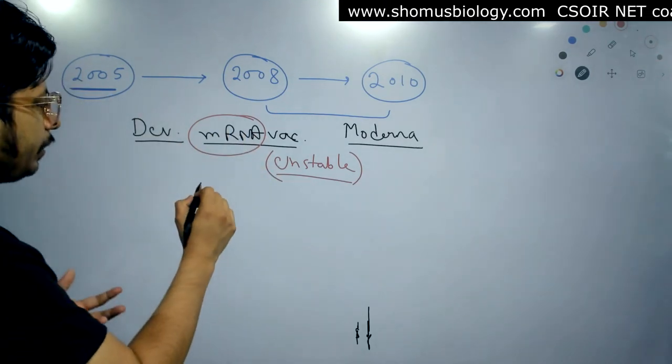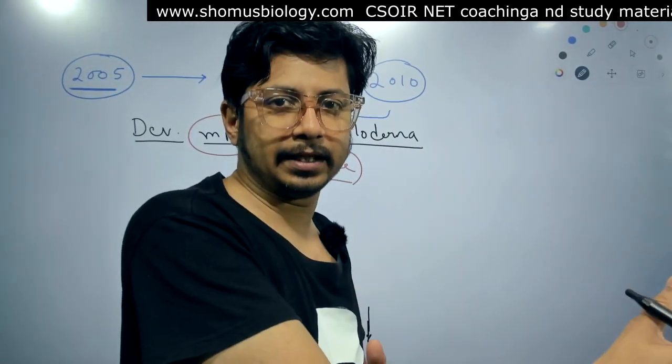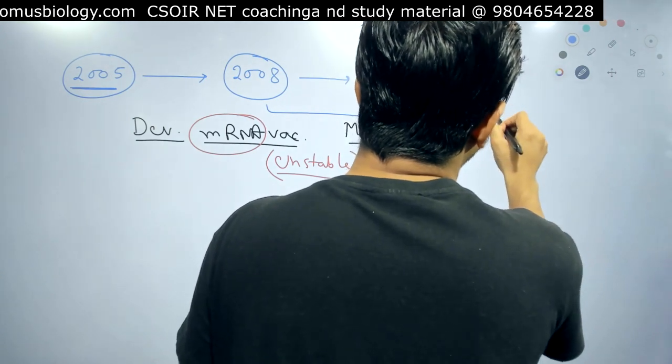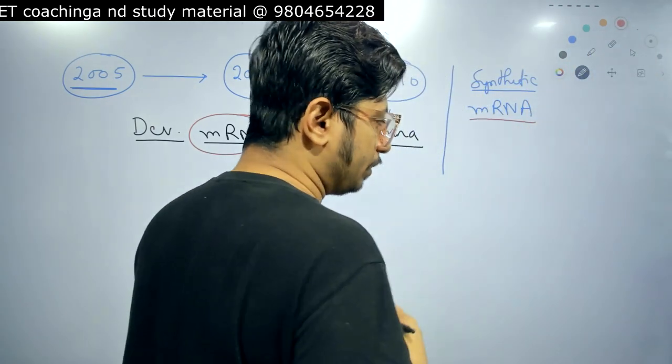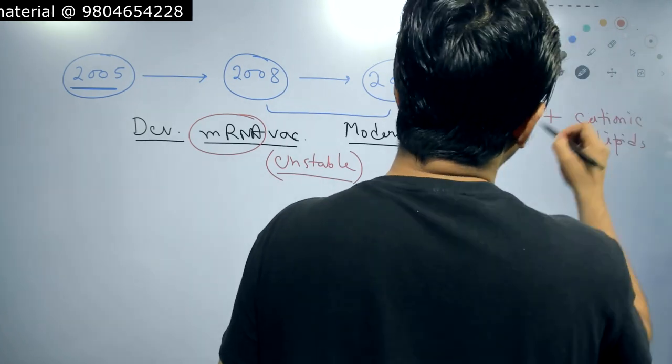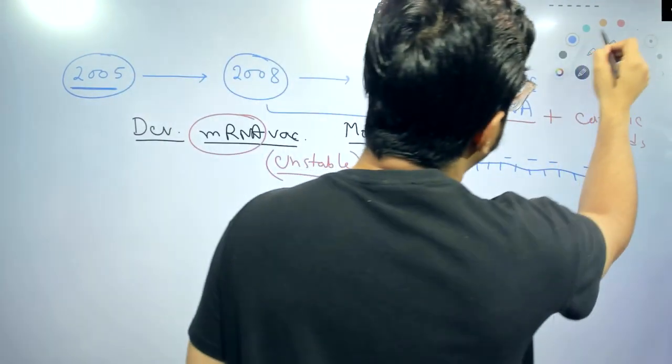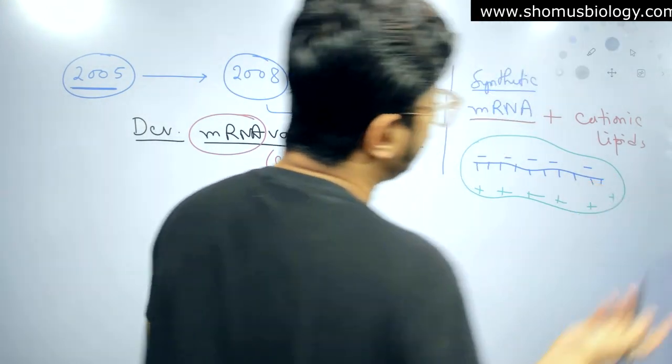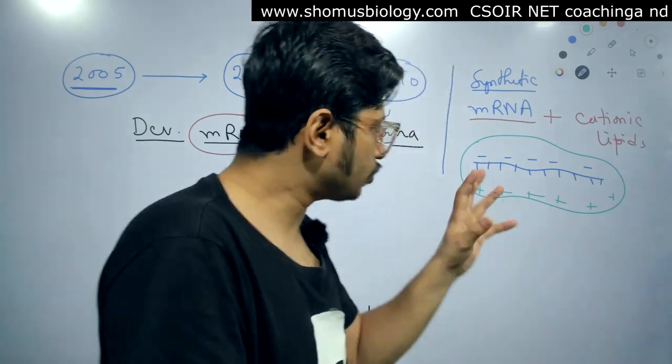They were working with synthetic mRNA produced outside the human body in vitro, and then inserting it inside the human body. Their research involved taking synthetic RNA, not organic, and using cationic lipids to deliver it. The mRNA has a single-stranded structure with a negatively charged backbone. The cationic lipids are positively charged and shield the mRNA, allowing them to deliver it inside the host. They started this in mice models to see the response.